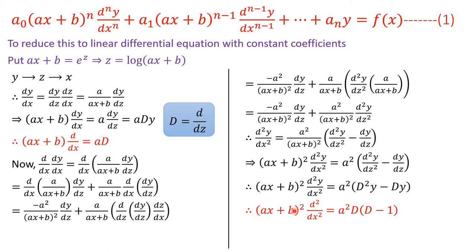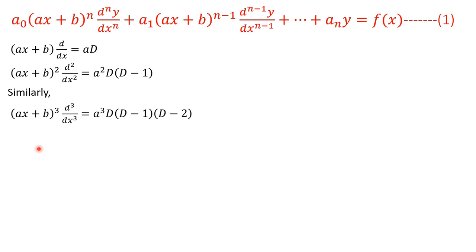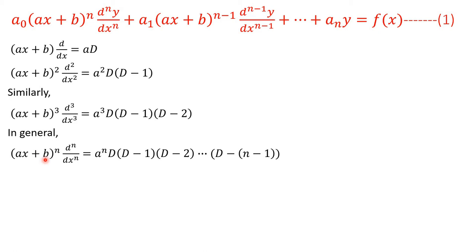So (ax+b)²·(d²/dx²) = a²·D(D−1). Again, the left side has a coefficient that is a function of x, but the right side has coefficient a², which is constant. Similarly, for the third-order term: (ax+b)³·(d³/dx³) = a³·D(D−1)(D−2). In general, for the nth order operator: (ax+b)^n·(d^n/dx^n) = a^n·D(D−1)···(D−n+1). Substituting all these into the original equation gives a linear differential equation with constant coefficients.